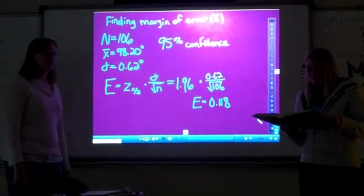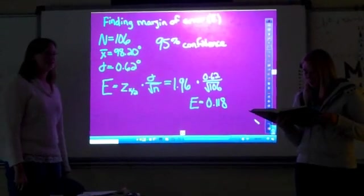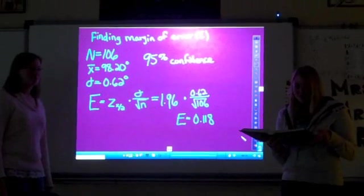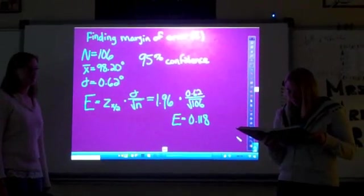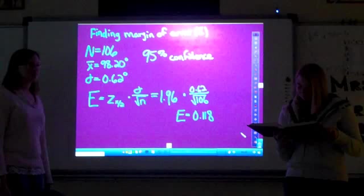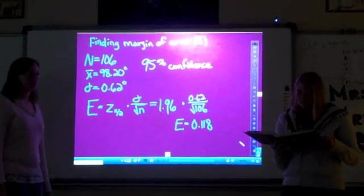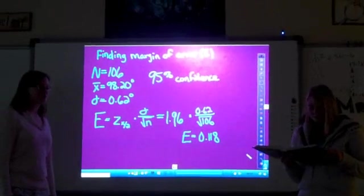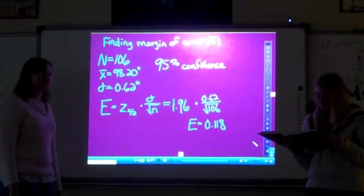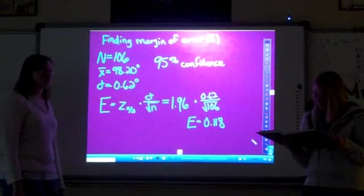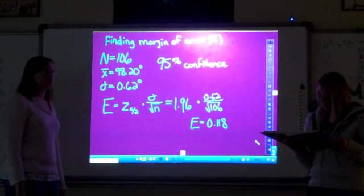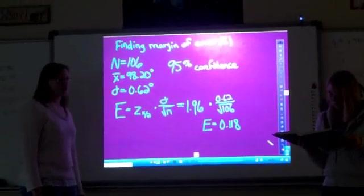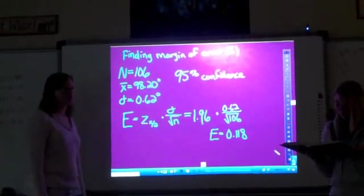For our problem, the body temperatures, the sample of body temperatures in an appendix in our book, we have n equals 106, x, which is the mean of the sample, is 98.2, and we're to assume that the sample is a simple random sample and that standard deviation is somehow known to be 0.62 degrees Fahrenheit using a 0.95 confidence level.